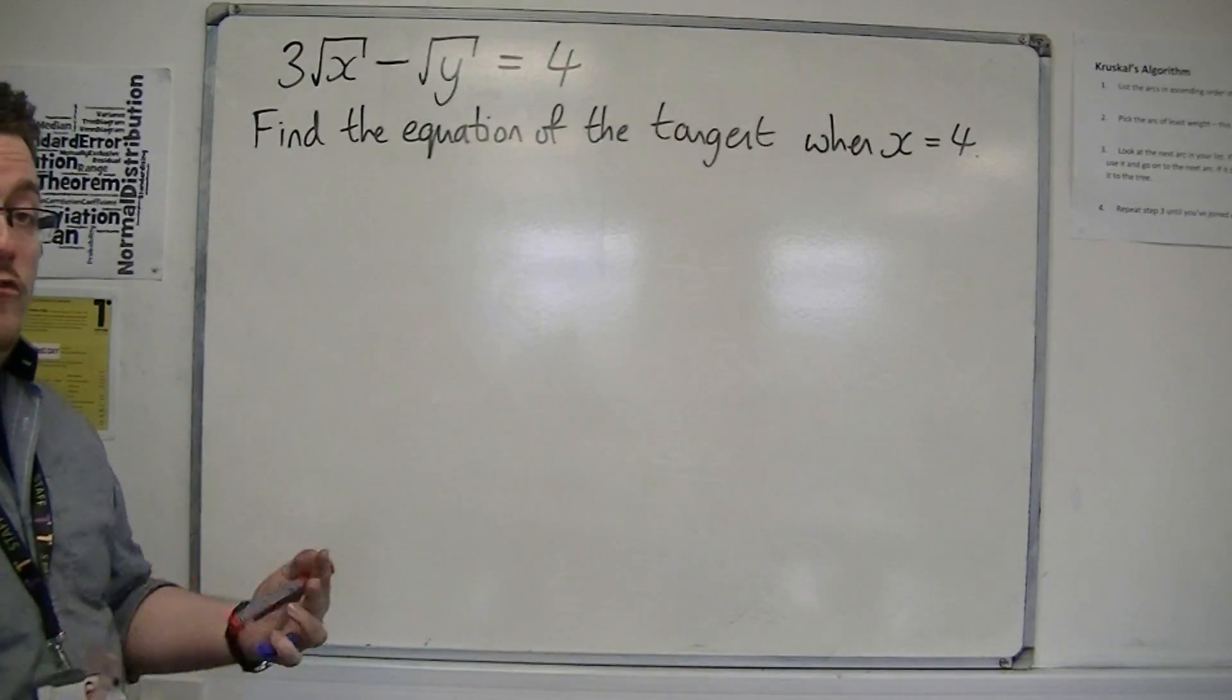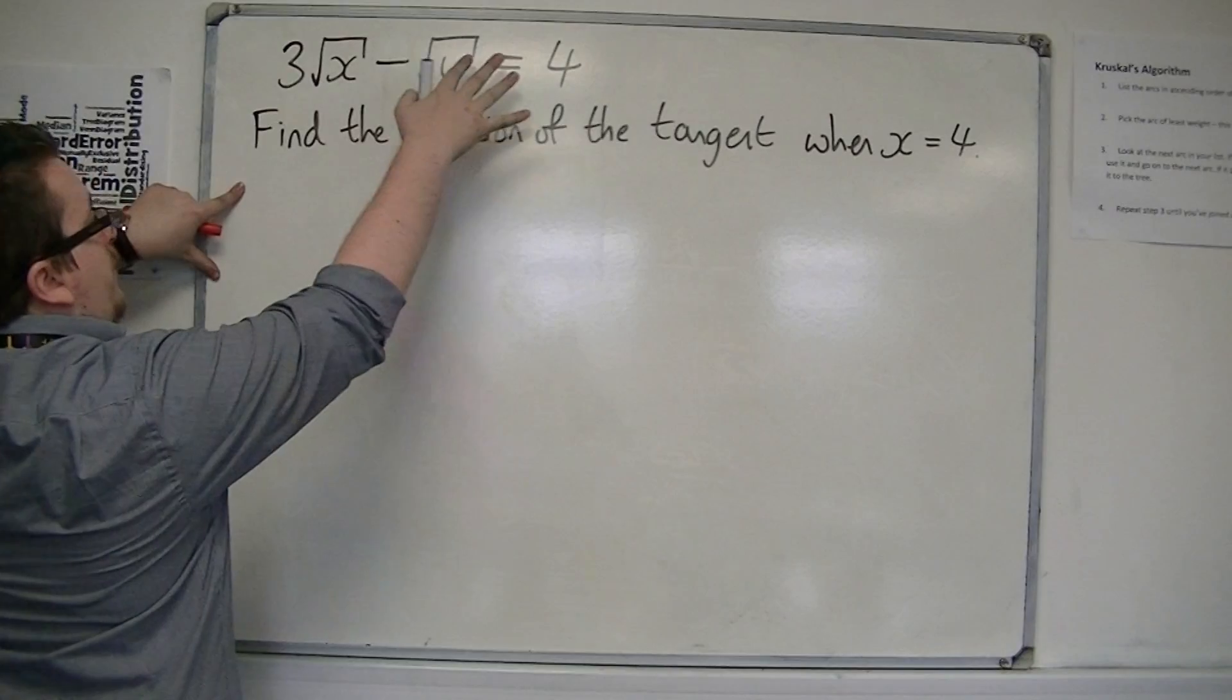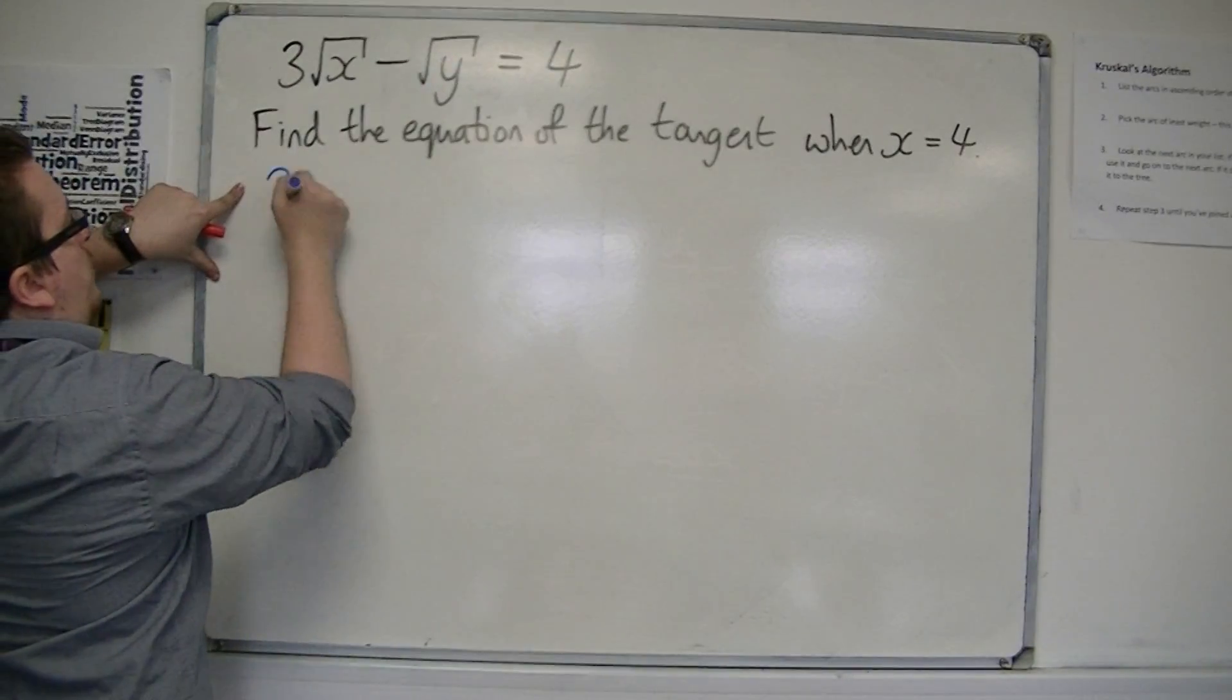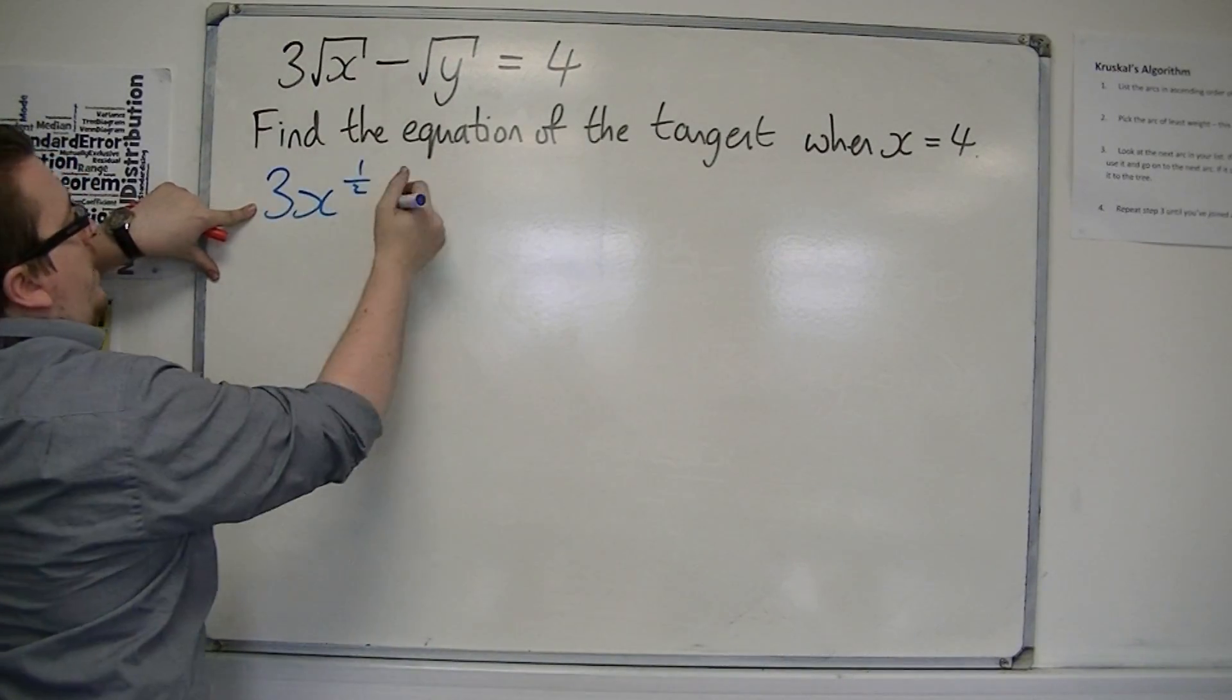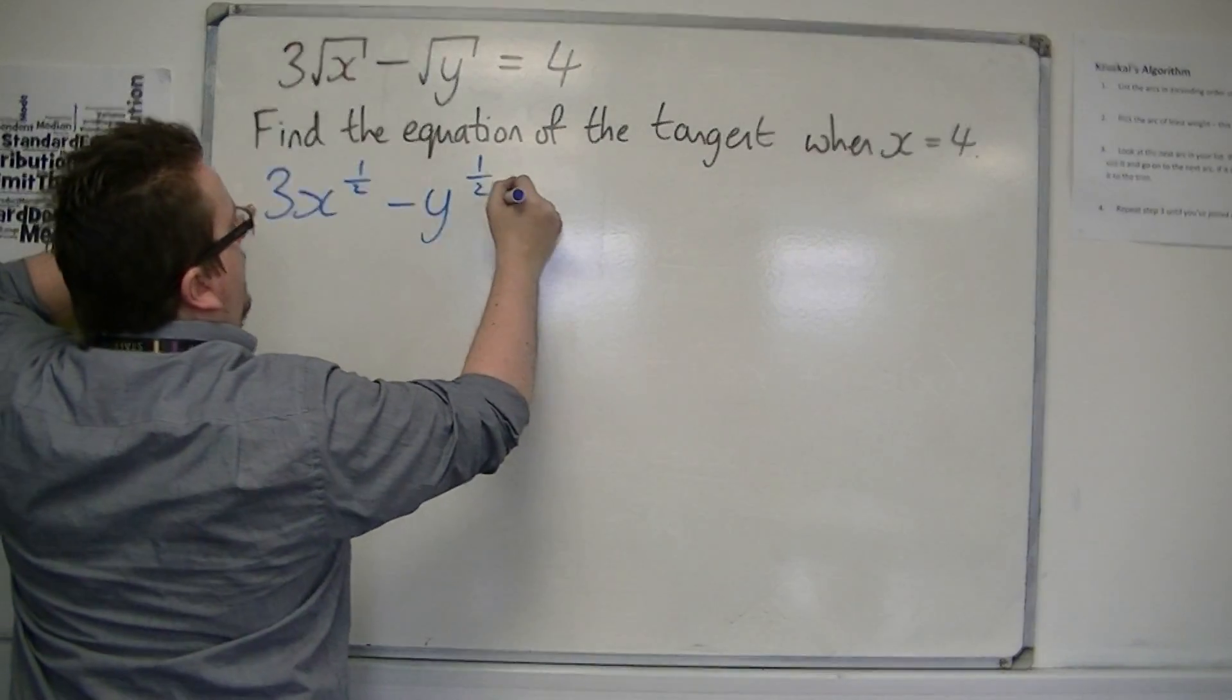So as I said, we're going to need to differentiate it first. So, first of all, I'm going to rewrite this in a form that's going to be more easy to work with. 3x to the half take away y to the half is equal to 4.